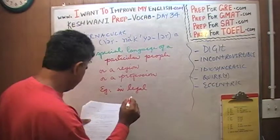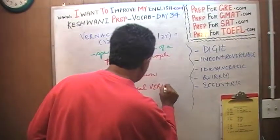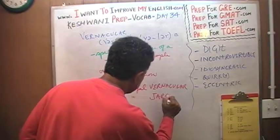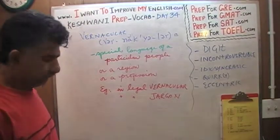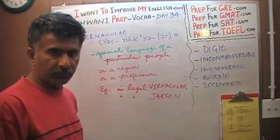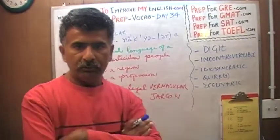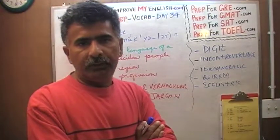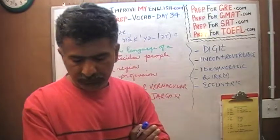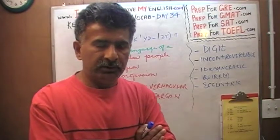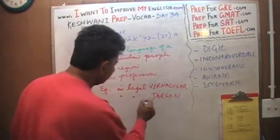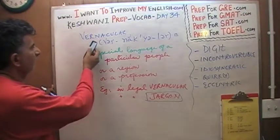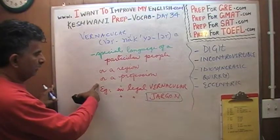You must have heard people talk about legal vernacular, or legal jargon. A vernacular is a special way of talking for a given group of people. Every profession — as I said, if two doctors are talking to each other about what is wrong with you, most likely there are a lot of terminologies you will not understand, because they are employing their own vernacular. It's a special language, special lingo, of a particular group, people, a particular profession, a particular region.